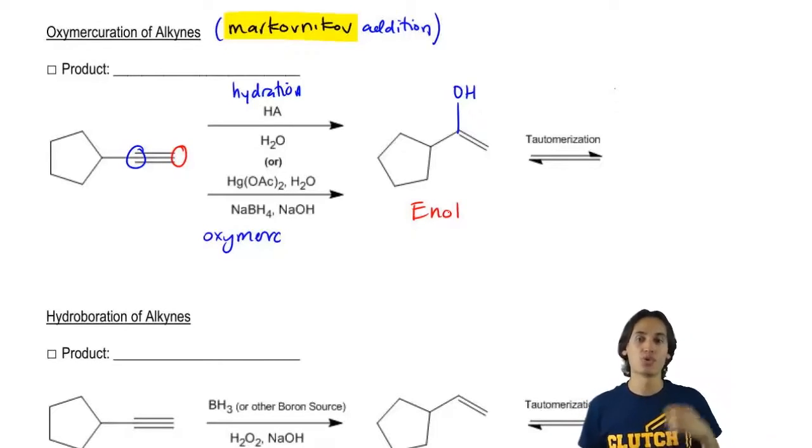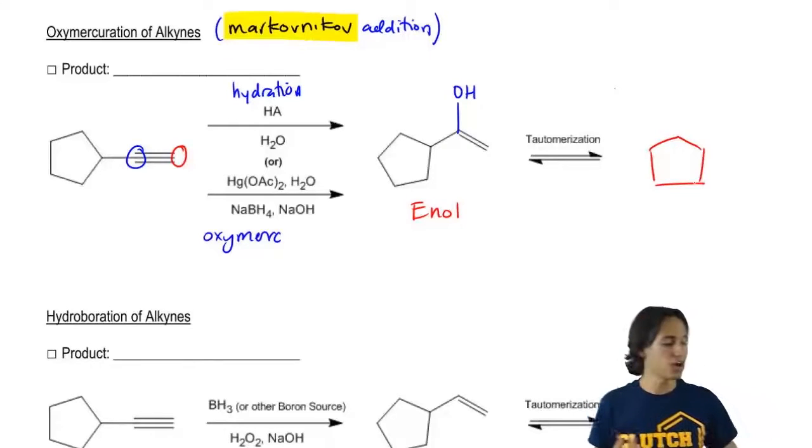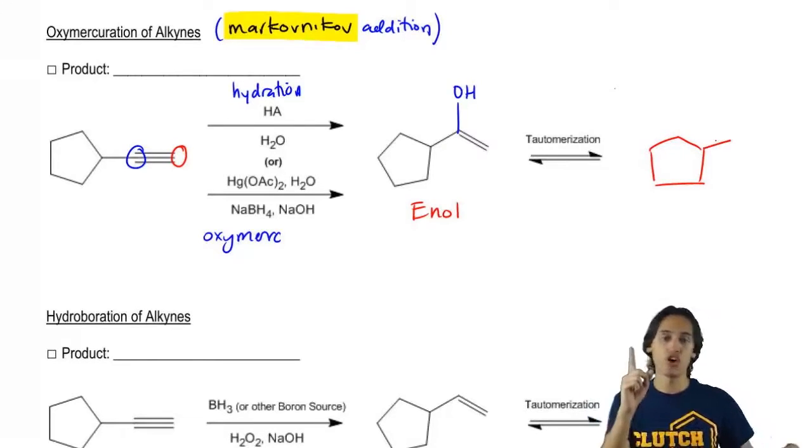They like to tautomerize. So after the tautomerization process, what's the product going to look like? Well, the product is going to be the same ring.